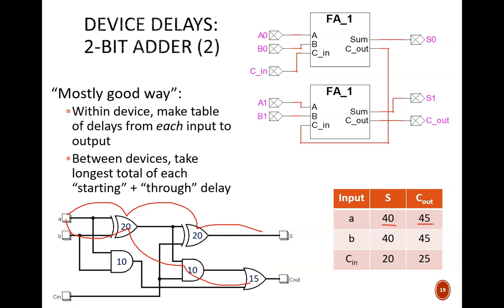It turns out that inputs A and B are identical to each other in wiring, and so their delays are the same. Input CN to S only passes through this single gate, so that delay is 20 nanoseconds. Finally, CN to C out passes through this AND gate and OR gate for a delay of 25 nanoseconds. As a check, note that the longest delay on the table is 45 nanoseconds, which matches the overall delay for a full adder computed in the last video.